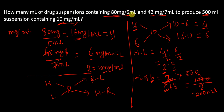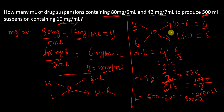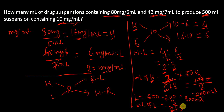To find ml of lower concentration: since the total is 500ml and higher requires 200ml, then 500 minus 200 equals 300ml. Alternatively, 3 divided by 5 times 500 also equals 300ml. So we need 300ml of the lower concentration solution, which is 42mg per 7ml.